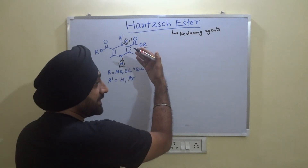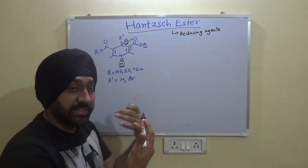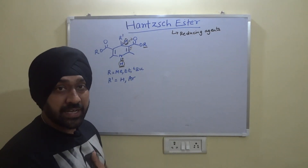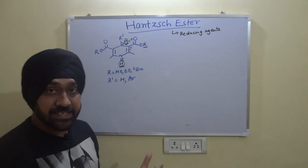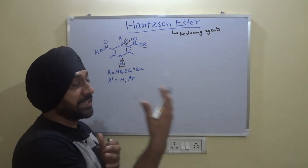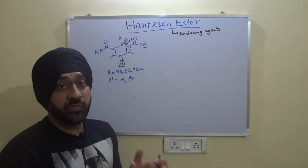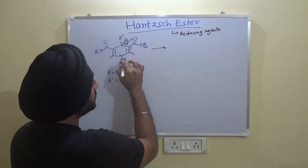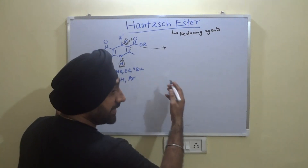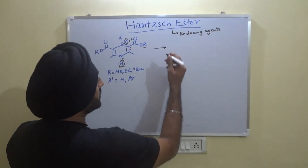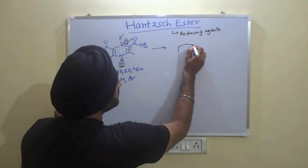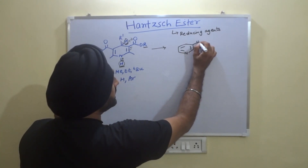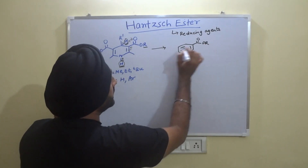When these Hantzsch esters act as reducing agents, they themselves get oxidized in the process. When oxidized, they form aromatic pyridines, which is the driving force for the reaction. So when they give up these two hydrogens, they get oxidized into these pyridine species, which are aromatic in nature.